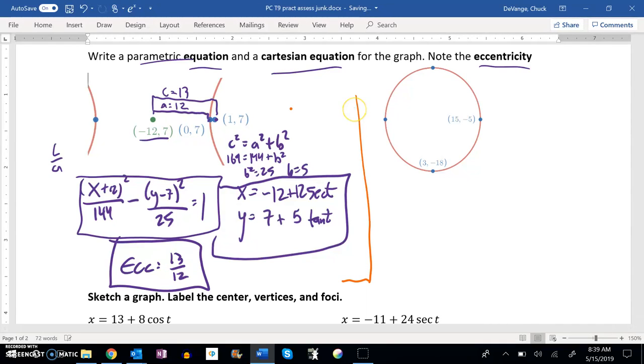This is pre-calculus and topic 9, and we are working on the practice assessment for it. And for this, we want to write a parametric equation, a Cartesian equation, and find the eccentricity of this ellipse.